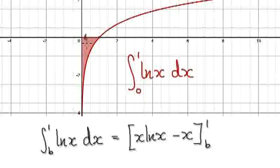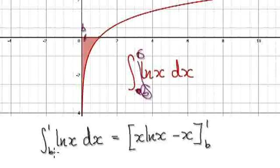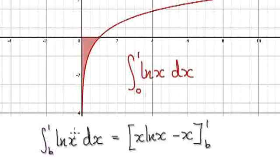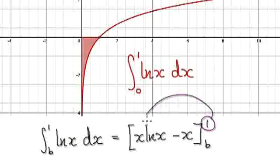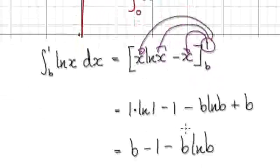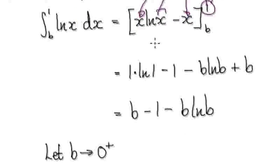So the first step is to integrate it from an arbitrary point b to 1. When you integrate this, it will give you the antiderivative expression. Now you've got to substitute the bounds into this expression — put 1 in, and then put b in. That will then give you this result.